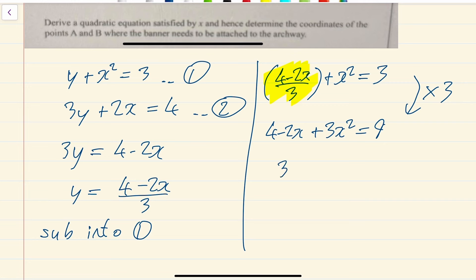We'll bring it all to one side, put it equal to 0. I have 3x squared minus 2x plus 4. Then 9 comes across, so that's minus 5 is equal to 0.